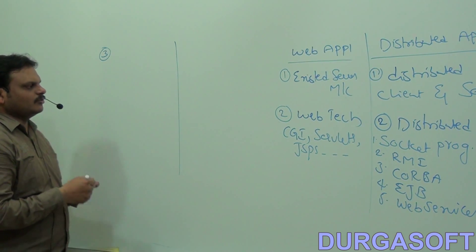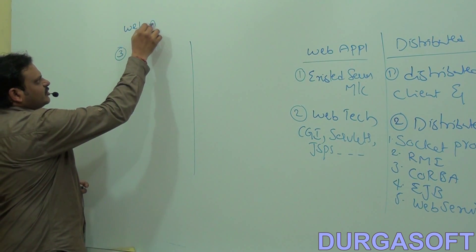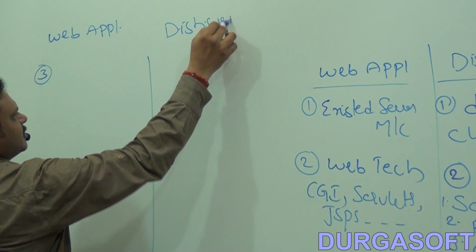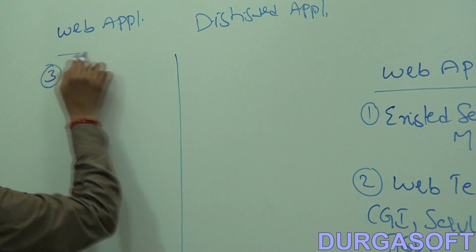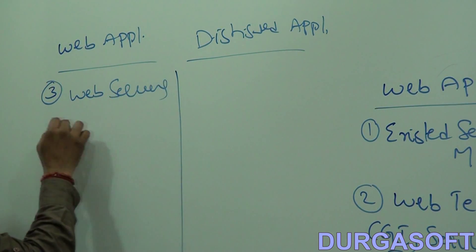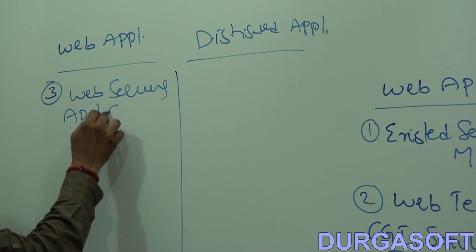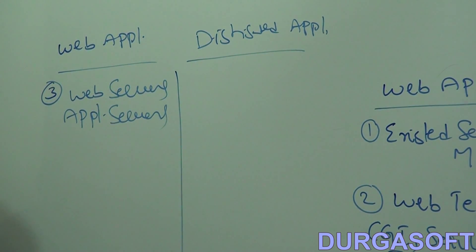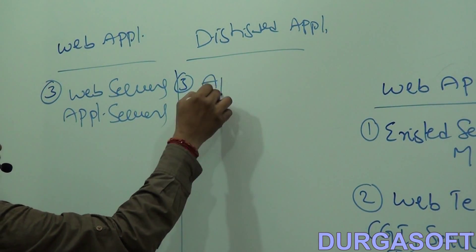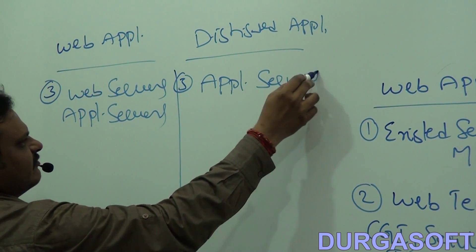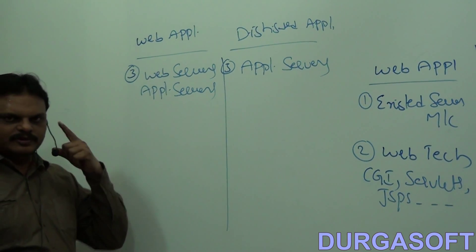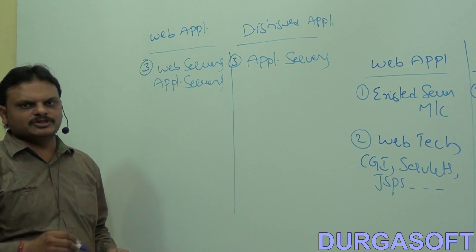So web applications can be executed by using both web servers and application servers. But distributed applications will be executed by using only application servers — web servers cannot be used for distributed applications.